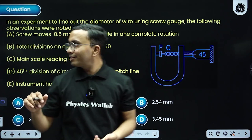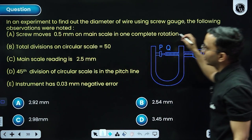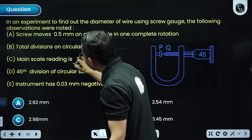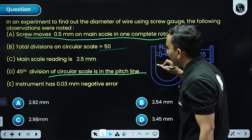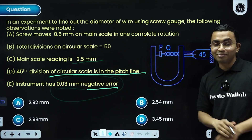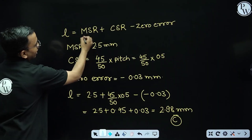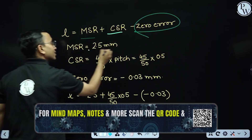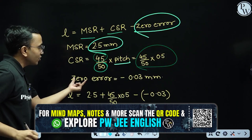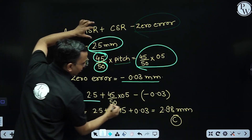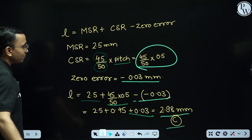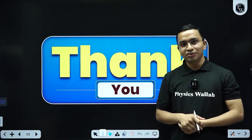Last question: finding diameter of a wire using a screw gauge. The screw moves a certain distance on the main scale in one complete rotation — that is the pitch. Circular scale has 50 divisions. Main scale reading is given, and the 45th division of the circular scale is on the pitch line. The instrument has a negative zero error. Length = main scale reading + (45/50) × pitch − zero error. Main scale reading is 2.5, circular scale gives 0.9 mm, zero error is −0.03 mm, so subtracting a negative adds 0.03. Final answer is option C. That's all for this video — we'll meet in the next 15×15 video. Thank you.